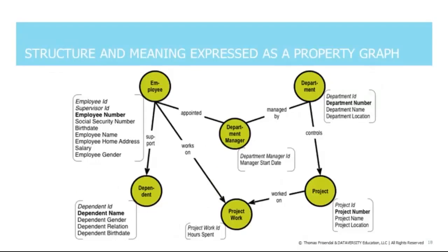This is a property graph data model. We have nodes and relationships. In this example, nodes have properties, and some properties have specific roles — notice the italics and boldface names used to handle identity and uniqueness. That brings us to the next issue: what are the differences between classic data modeling and graph data modeling?